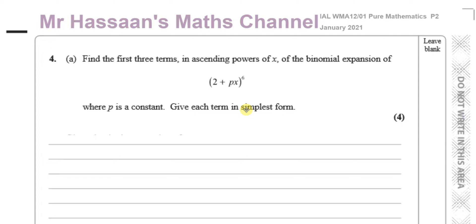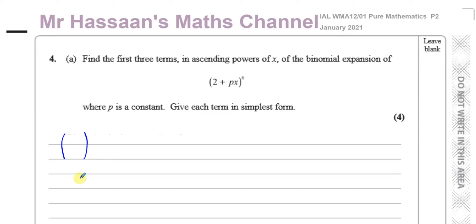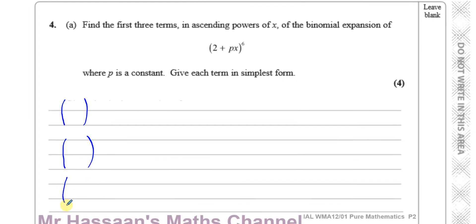We can use the binomial expansion method — the NCR method as it's known. I like to put three brackets here. The first bracket I use for the coefficient — the Pascal's triangle coefficient — which we use the NCR button for. The second bracket I use for the term which is going to be 2, and the third bracket for this term, which is Px.